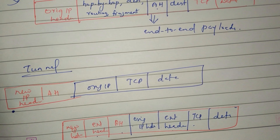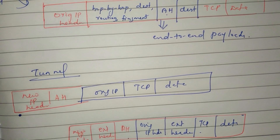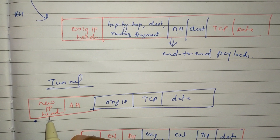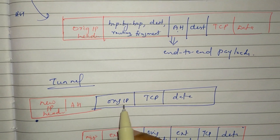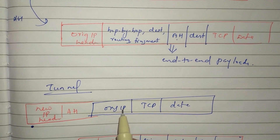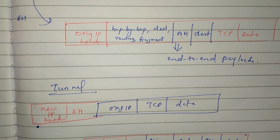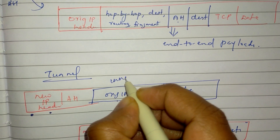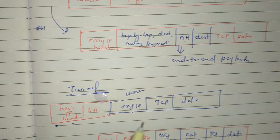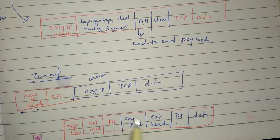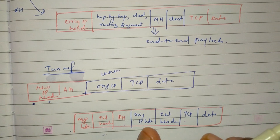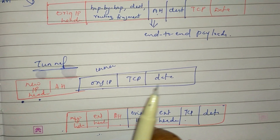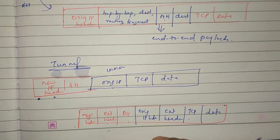What is the tunnel mode? AH covers the entire IP packet. The tunnel mode authenticates the entire IP packet — it is authenticated in the tunnel mode, including both inner and outer IP headers.